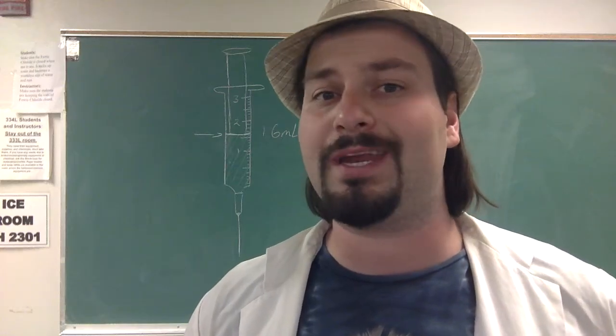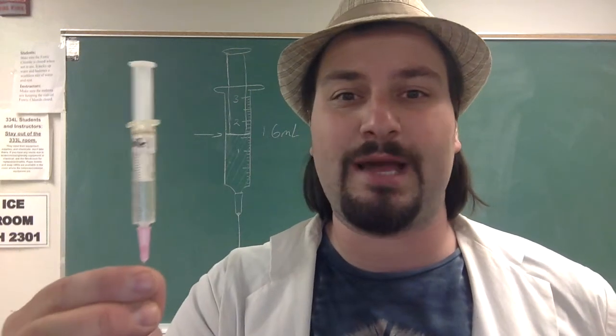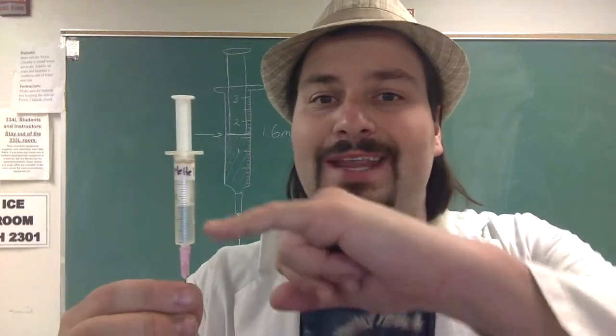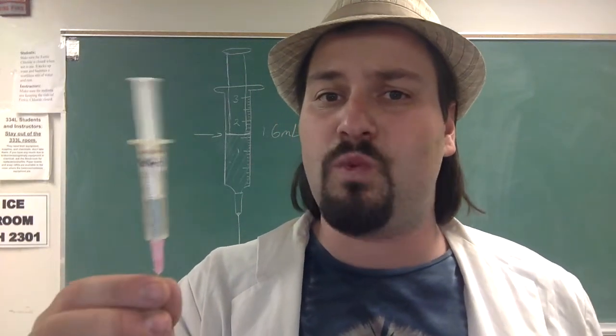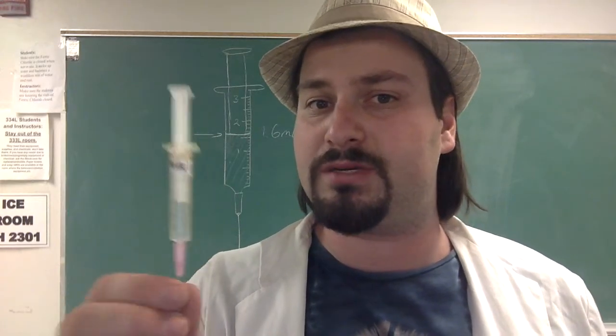When you're measuring both the bromobutane and the acetone, you'll be using this type of syringe. With this type of syringe, you want to make sure that you get the surface of the liquid to whatever you want to measure. For the bromobutane, that's 1.6. For the acetone, it's something else, so make sure you've got that right.